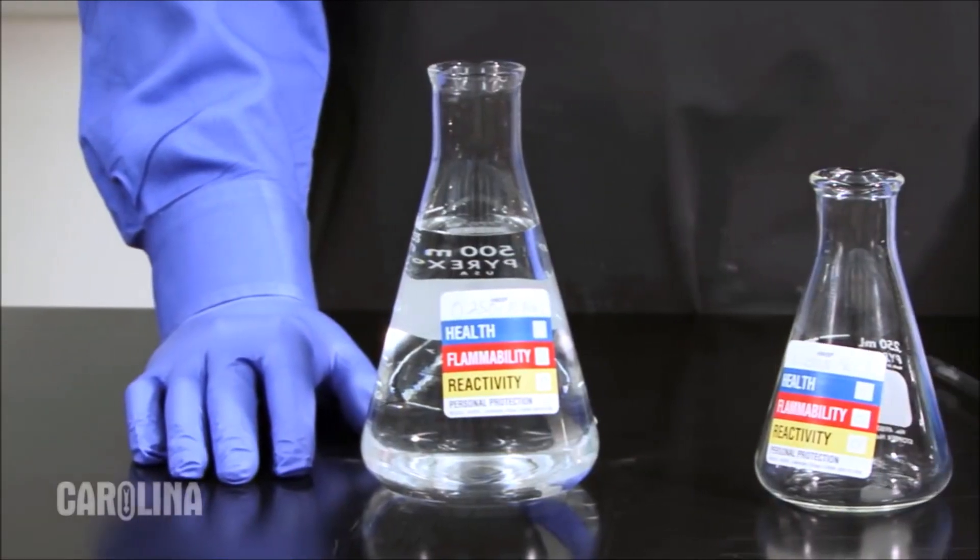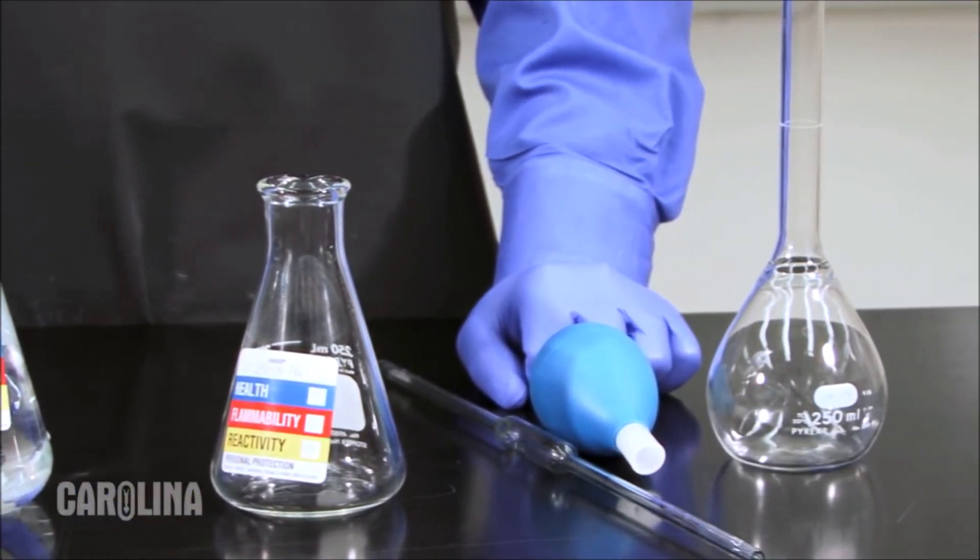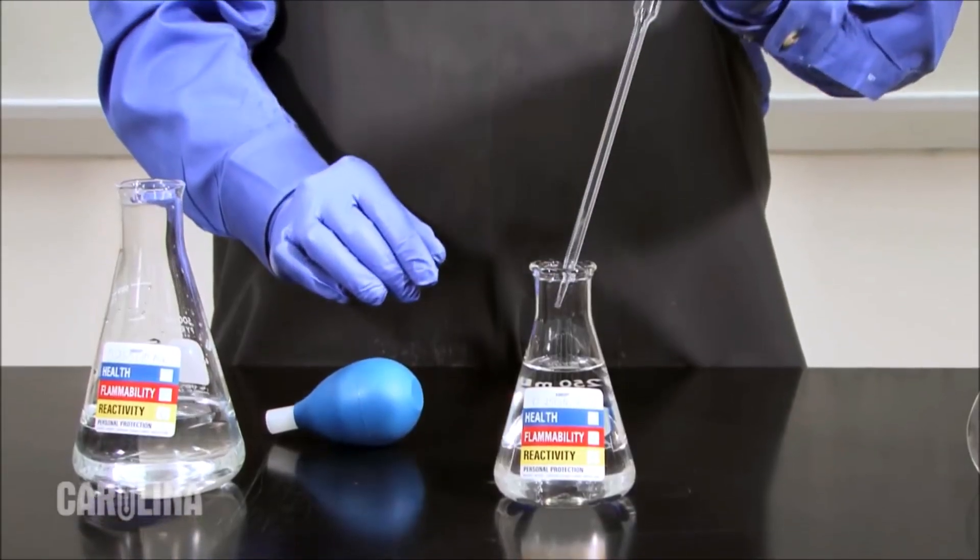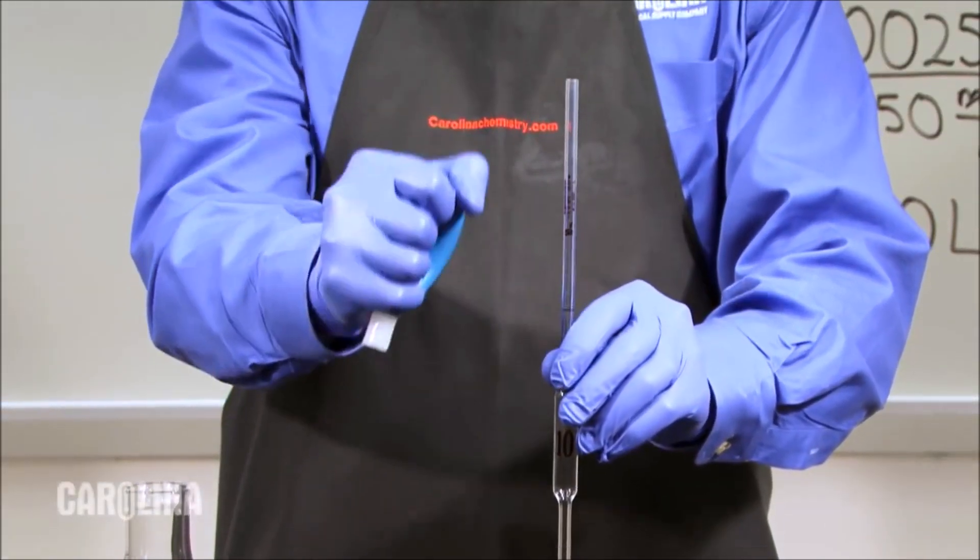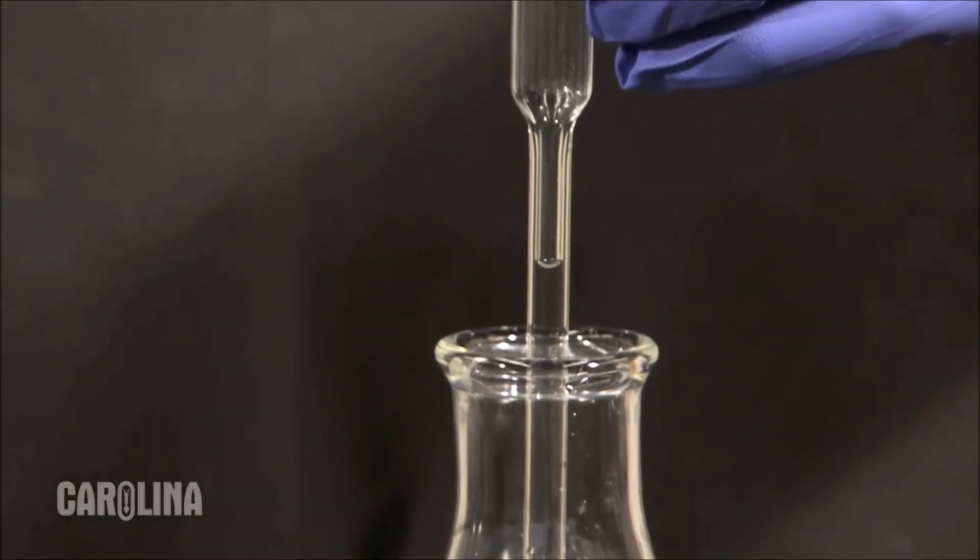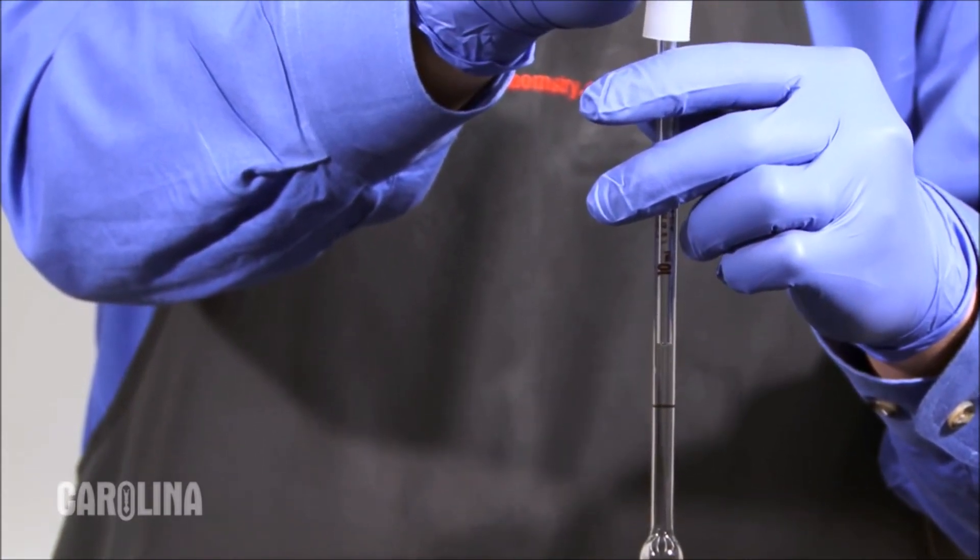To prepare our dilute solution, we will take a 10 milliliter aliquot of our stock solution using a 10 milliliter volumetric pipette. To use the pipette, place the pipette in the liquid to be collected. Squeeze the pipette bulb and allow the liquid to rise up the pipette. You should allow the liquid to pass the line marked on the pipette, but before the bulb.